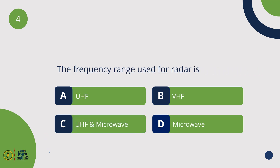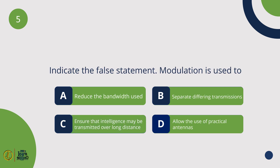The frequency range used for radar is UHF and microwave. Indicate the false statement: modulation is used to reduce the bandwidth used.